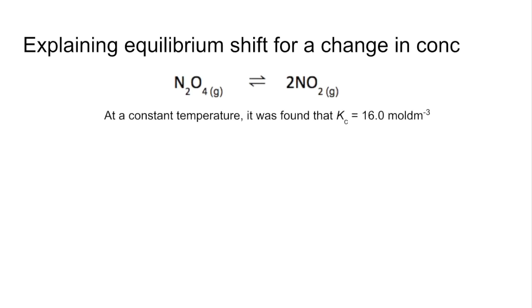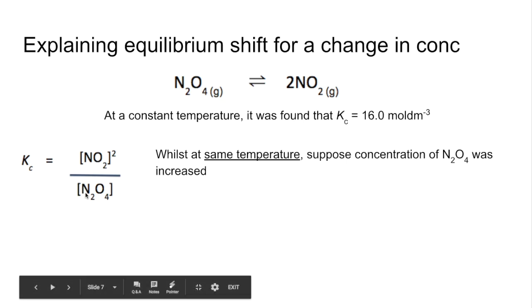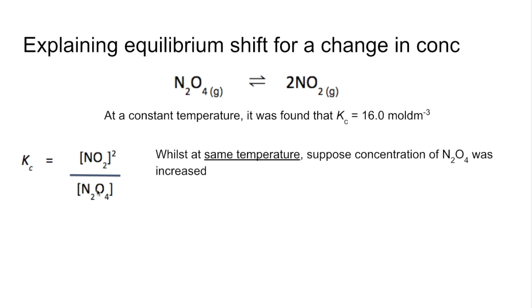So we'll use this equilibrium here, and we're told that at constant temperature, it was found that Kc had that value of 16.0 moles per decimetres cubed. So the Kc expression looks like that. So let's suppose that while at the same temperature, the concentration of the N2O4 was increased. So what's that going to do? That's going to increase this denominator term in the Kc expression. So it's actually going to change the value of Kc. It's going to make it less than it was before.